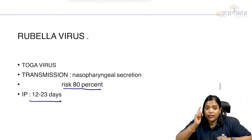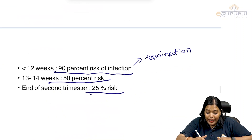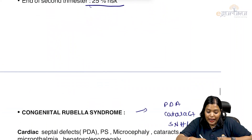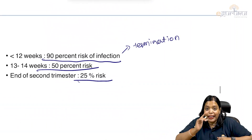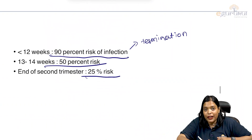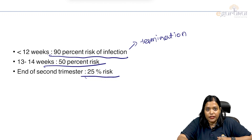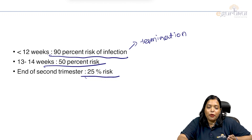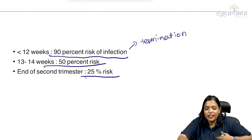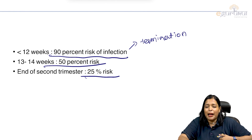Rubella virus is most teratogenic, with 90% risk of transmission if exposure is before 12 weeks. That's a summary of viral infections in pregnancy. Thank you.